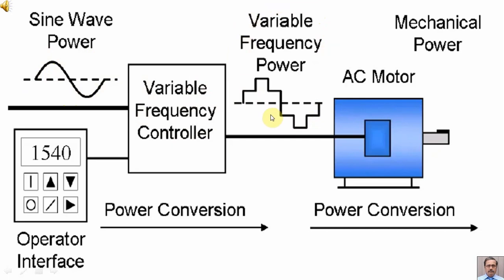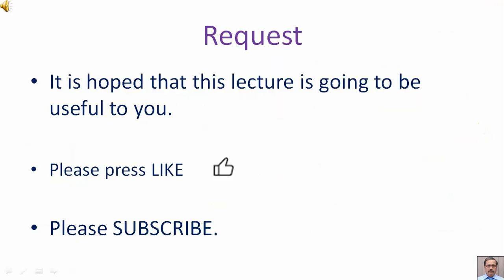The variable frequency power is fed into AC motor and output of the AC motor is mechanical power with variable speed. The power conversion is at two stages. First stage is sine wave power to variable frequency power. Second stage is variable frequency power into variable speed motor mechanical power.